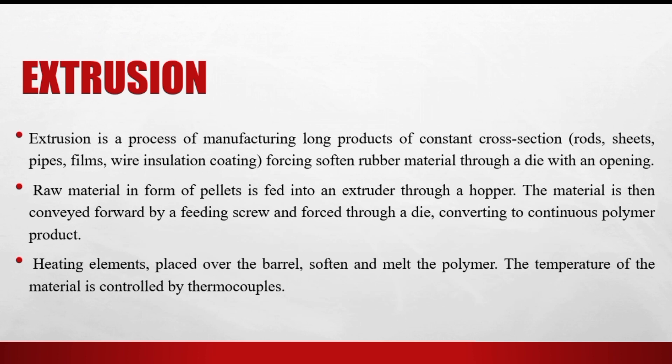Extrusion is a process of manufacturing long products of constant cross-section. We use it for long products like pipes, sheets, film, and wire insulation coating. The heated raw material goes through a die which opens on one side, providing a uniform cross-section. The raw material is supplied in the form of pellets or powder.